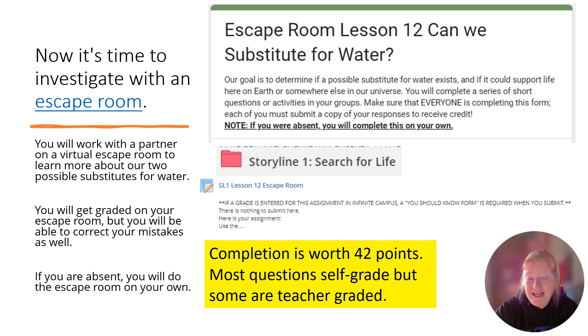Now it's time to investigate with an escape room. So in Schoology, you're going to find this, the lesson 12 escape room. The completion of the escape room is worth 42 points. Most of the questions are self grading. Some I have to grade and award you the points. You are going to work with a partner to go through this escape room, but you both have to make sure that you're actually completing it. You don't get a grade unless you submit it. You are going to be able to correct your mistakes because you will have to sign in in order to complete the form. If you are absent, you are going to have to do it on your own. So if you're here, you get to use a partner. So that's your next step. Now that you completed this, you showed me the notes. Next step is to get to the escape room. All right. You're ready.